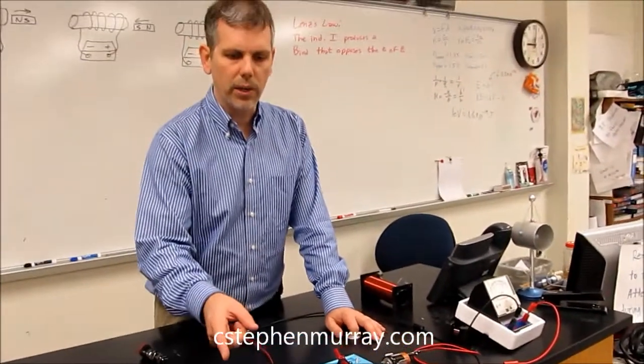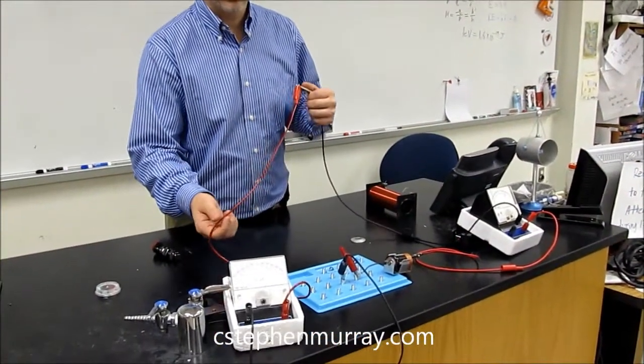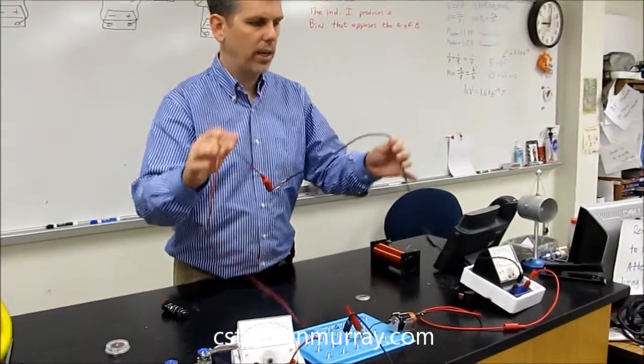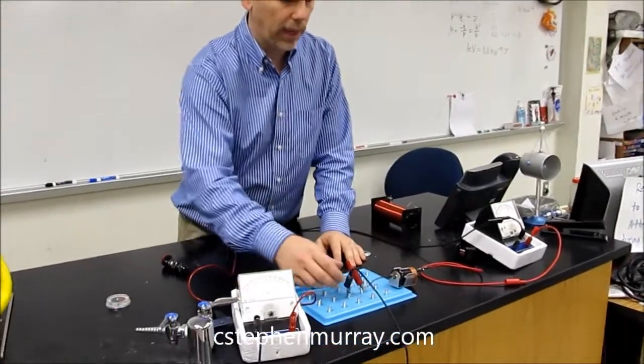A galvanometer is actually just an ammeter that records microamps, so it's a very sensitive ammeter. If you'll notice here, we have red going into black and then red going through the circuit back to black.